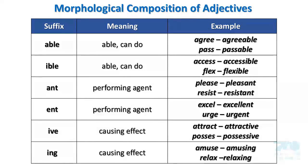Performing agent: Please → pleasant, Resist → resistant. Performing agent: Excel → excellent, Urge → urgent. Causing effect: Attract → attractive, Possess → possessive.